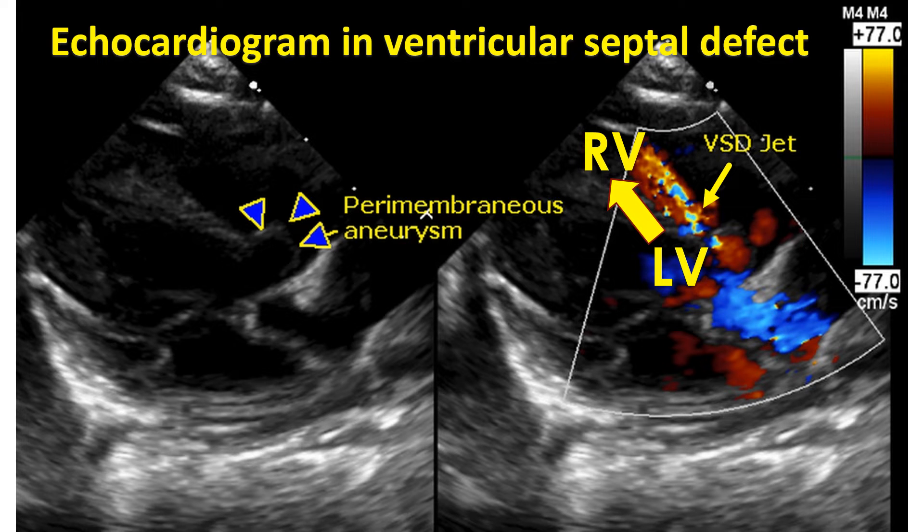This is an echocardiogram showing a left-to-right shunt from the left ventricle to the right ventricle. Left-to-right shunt occurs in VSD because the left ventricular pressure is normally much higher than that in the right ventricle.